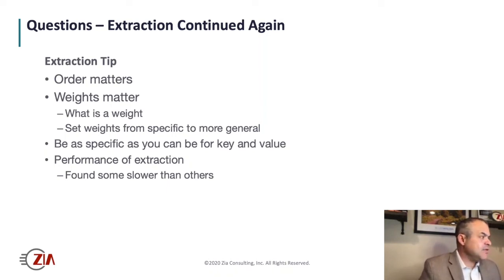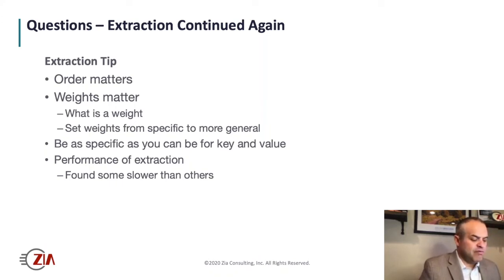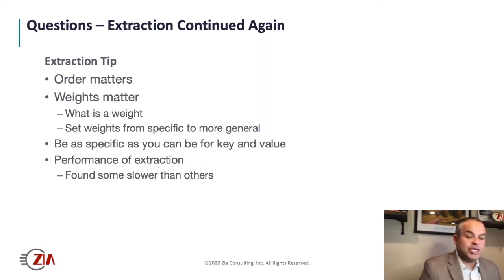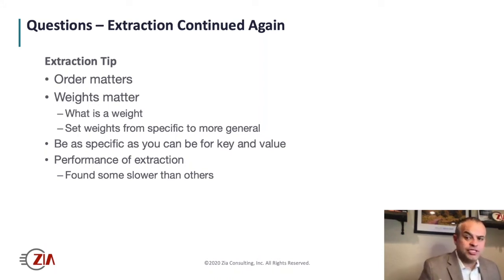Performance of extraction is something to be aware of. The more rules you have, the more potential performance issues. I've never seen benchmarks for paragraph extraction or cross-section, and I have seen them take a while. So start with simple things like key-value, and only go into cross-section or paragraph extraction if necessary.